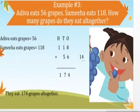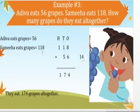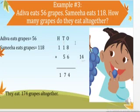Now look at another example. Example number 3. Adiwa eats 56 grapes. Sameha eats 118. How many grapes do they eat all together? In this example, we want to add a 2-digit number into a 3-digit number. So Adiwa eats 56 and Sameha eats 118. How many do they eat all together? Now we write these 2 numbers carefully in the place value chart according to their place value.